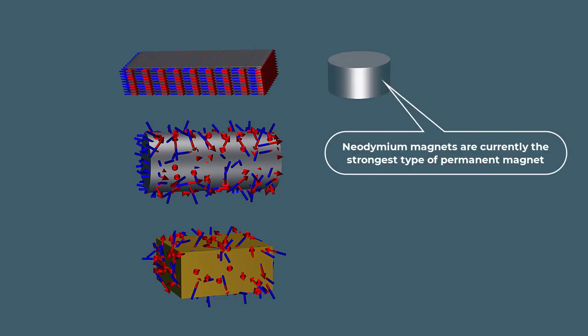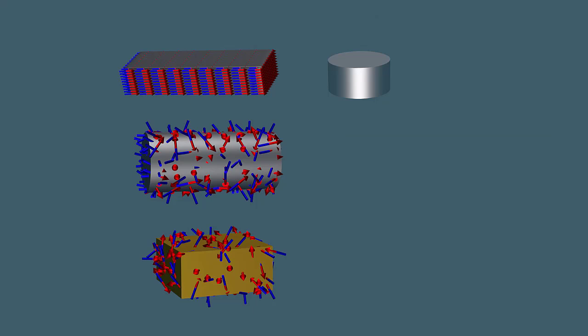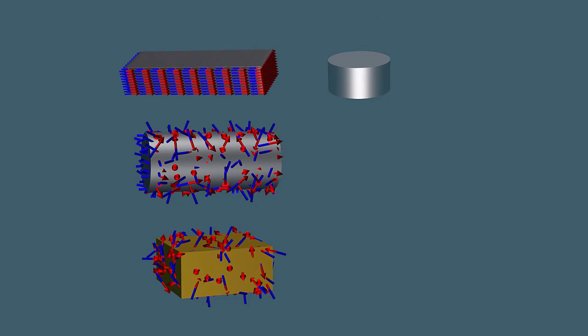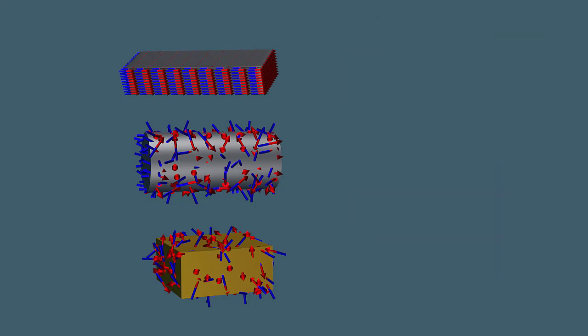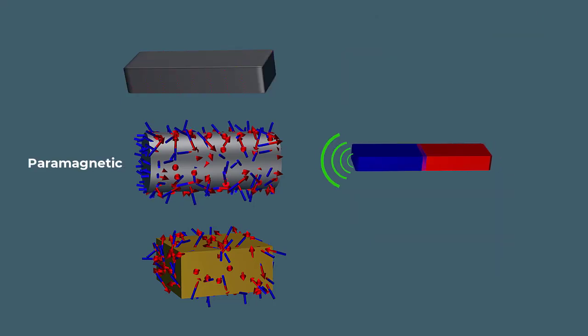Neodymium magnets are currently the strongest type of permanent magnet commonly available. They are composed of neodymium, iron, and boron, and are widely used in various electronic devices such as loudspeakers, electric motors, hard drives, and MRI machines.